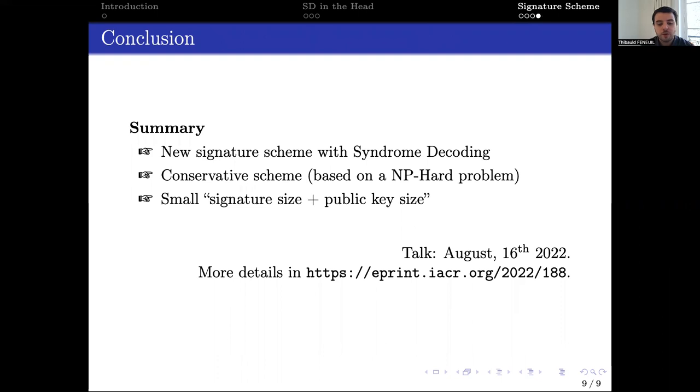To conclude, we proposed in this work a new code-based signature relying on the syndrome decoding problem for random linear codes. This signature has competitive performance regarding the current state-of-the-art. Thank you for your attention, and see you on August 16th for the complete talk.